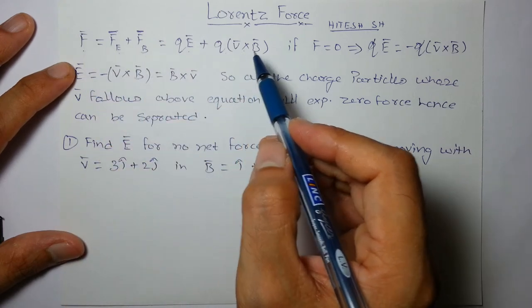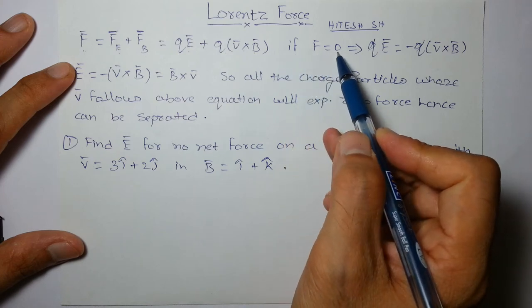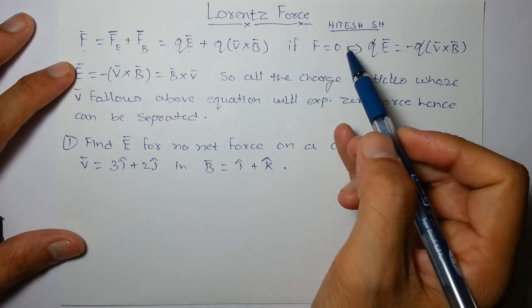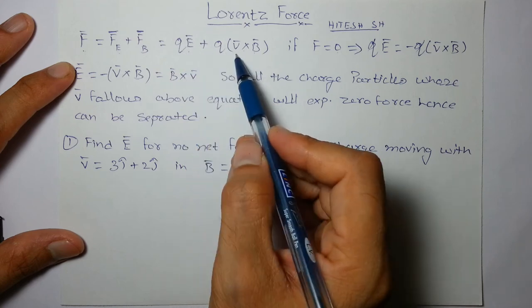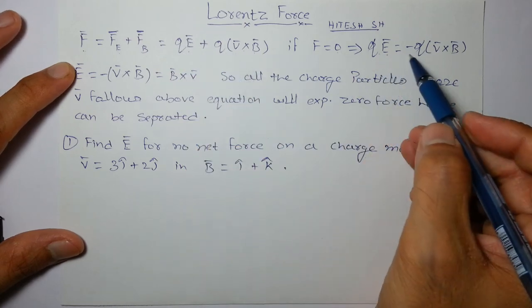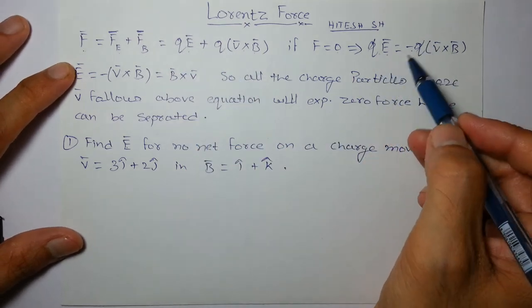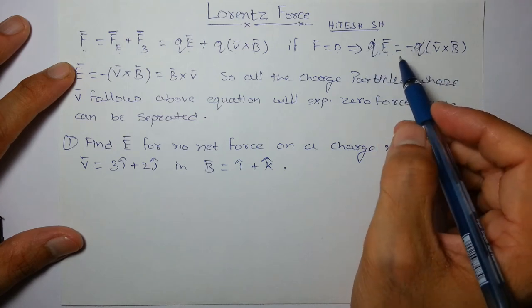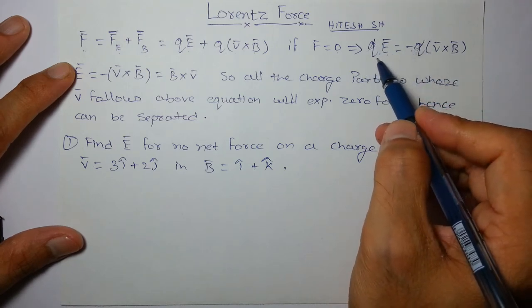One important thing is, sometimes it is given that net force is zero. So in that situation, they will cancel each other. Hence, QE must be minus QV cross B. Q can be cancelled, provided it is not zero.